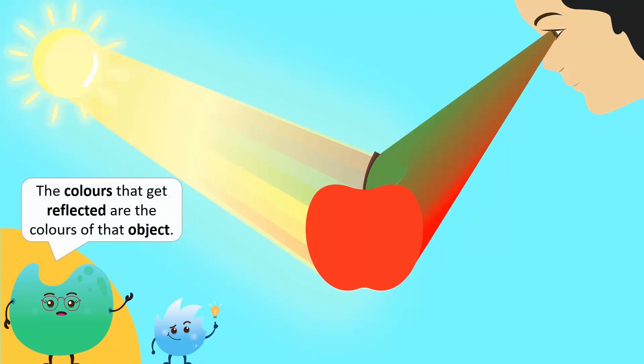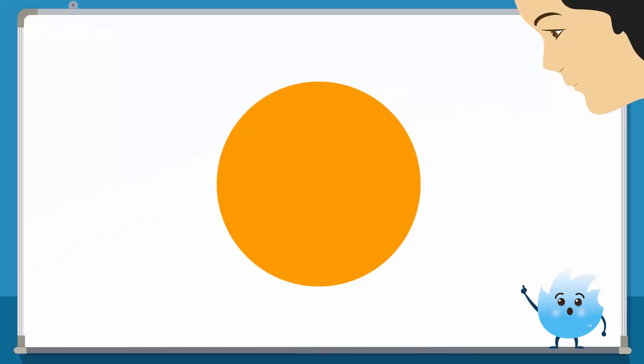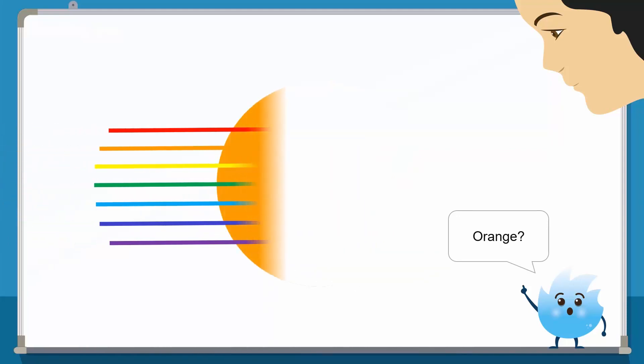So we can say the color of an opaque object depends on the color or colors of the light it reflects. For example, look at this. What color do you see? Orange, that's right. What's happening to the other colors? They're being absorbed.